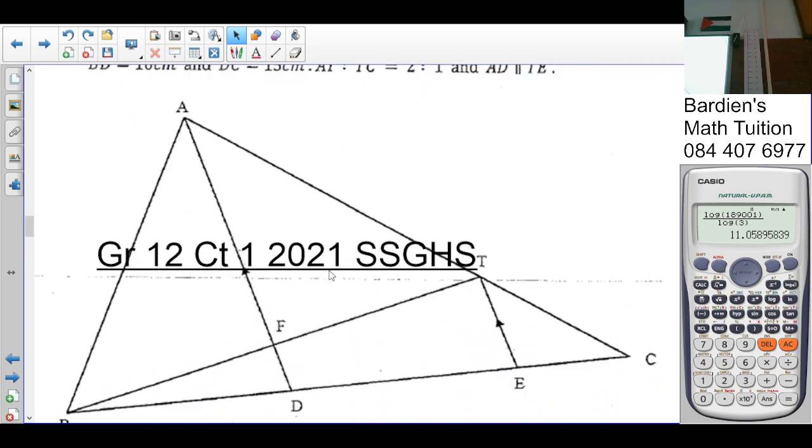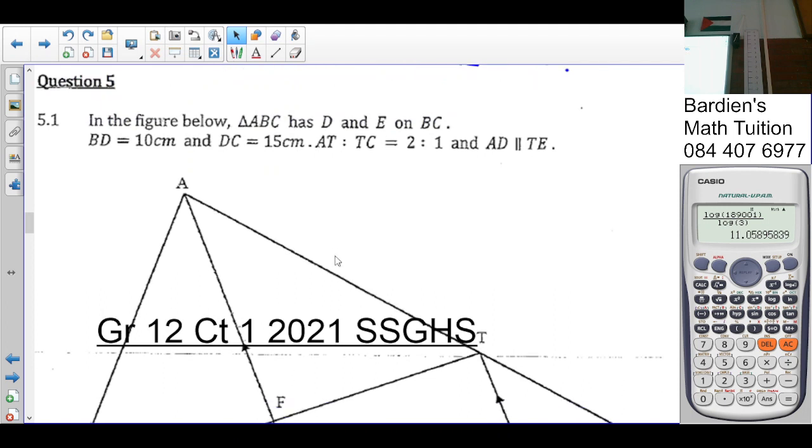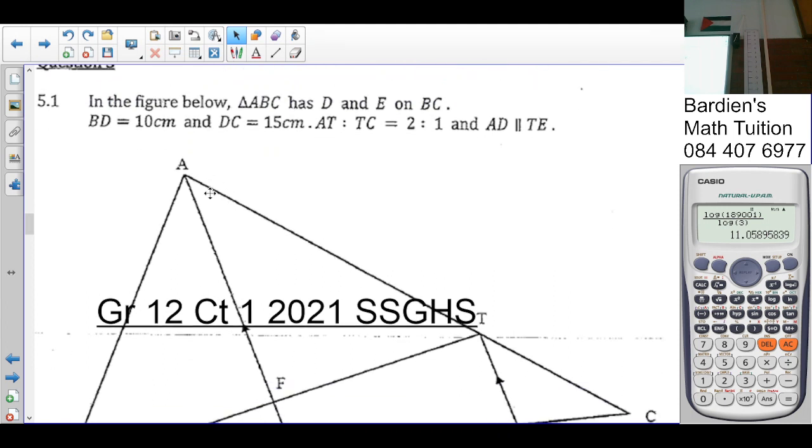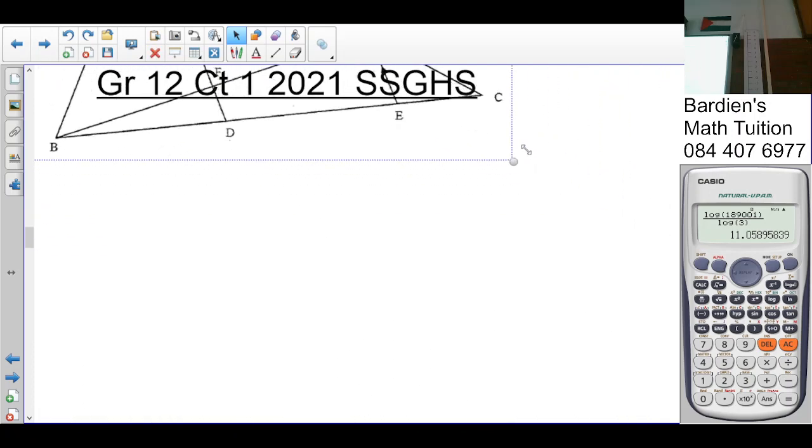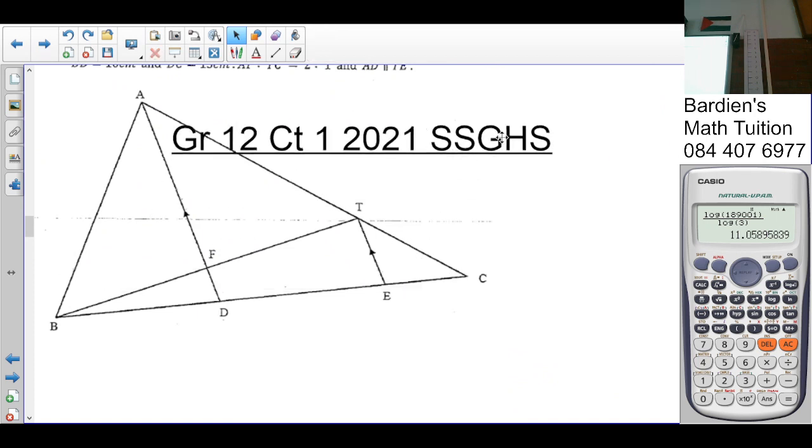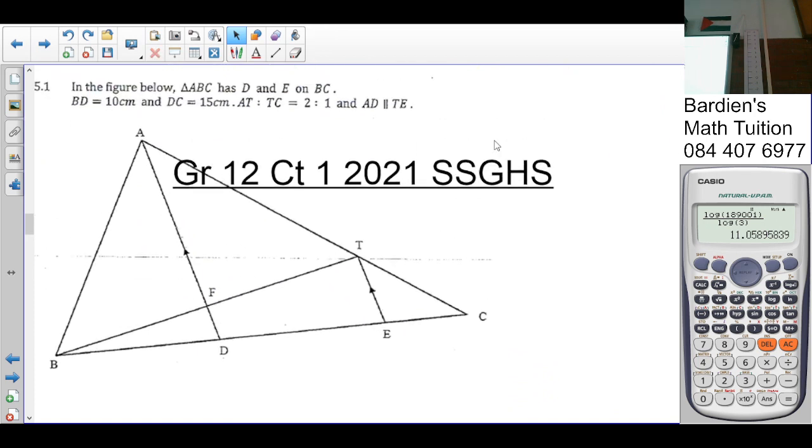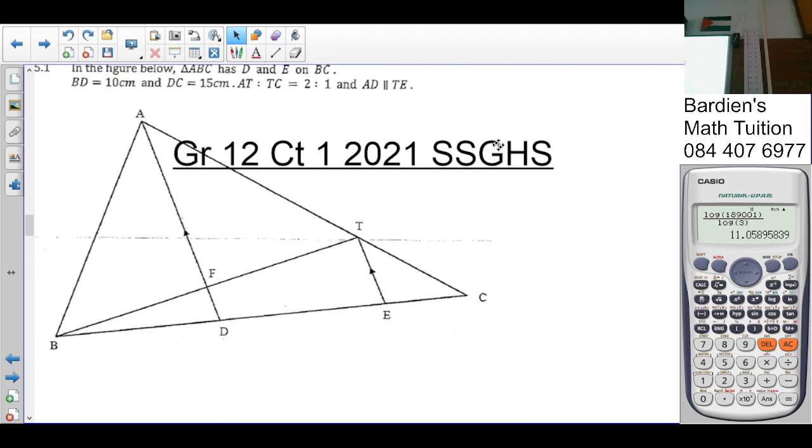Question 5, 5.1. In the figure below, we have triangle ABC with D and E on BC. So there's some information that we need to fill in on the diagram. So here in the figure below, DB is going to be 10 centimeters. DC, which is this length from there to there, is going to be 15 centimeters.